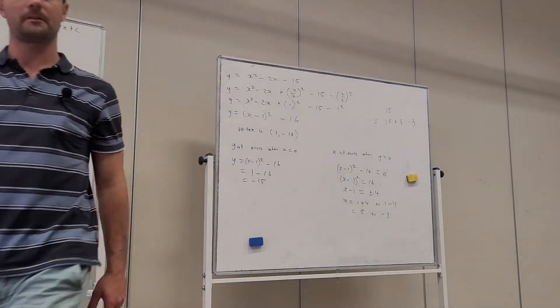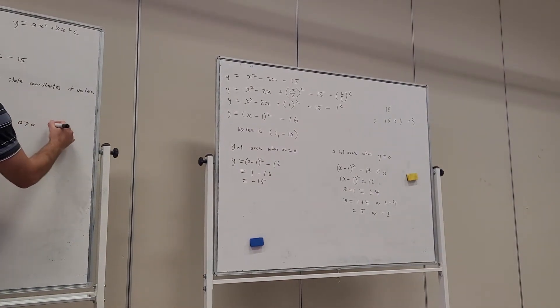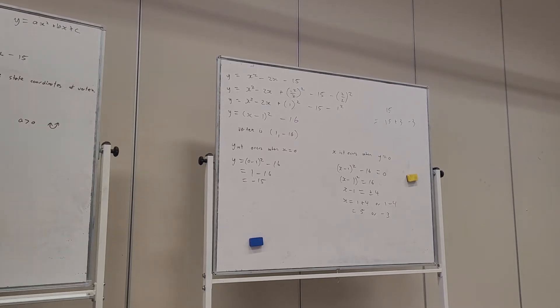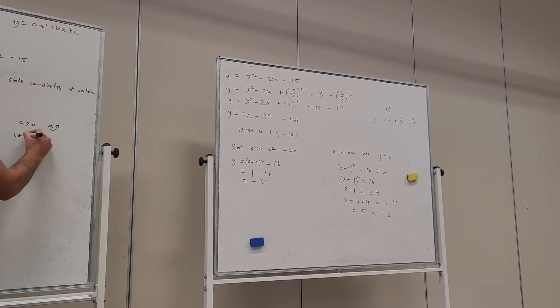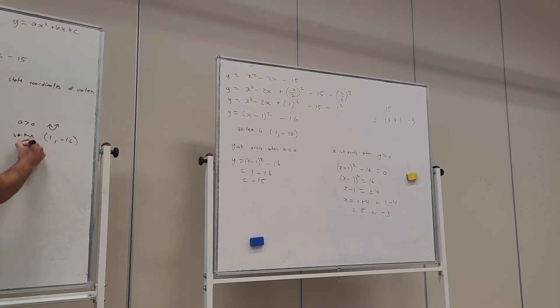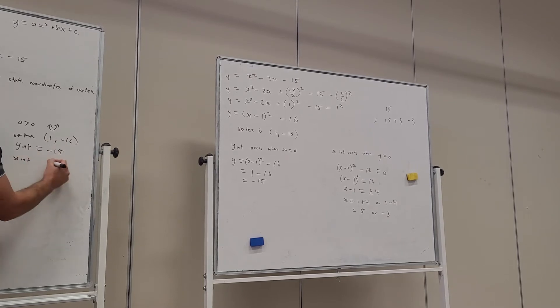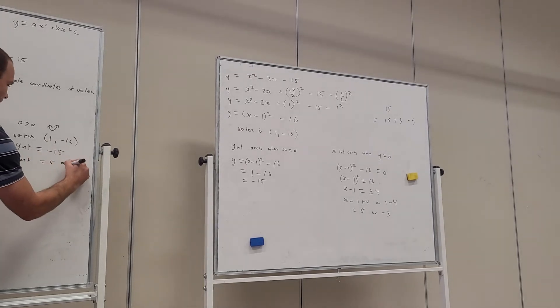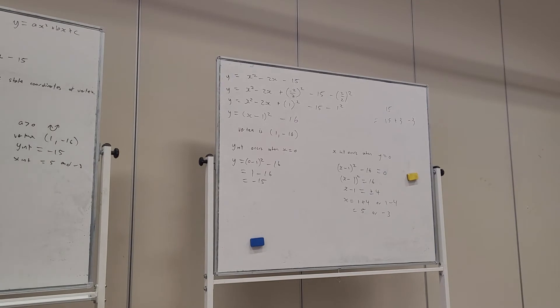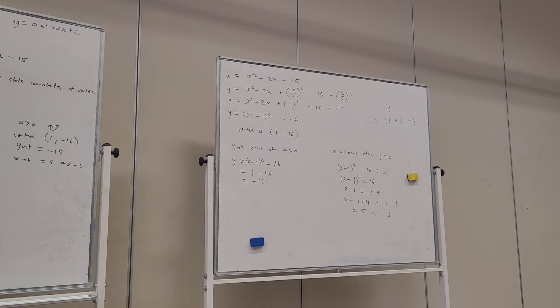And we've got all of the information we could possibly need to put it on a graph. So I'm going to just list the information here. Firstly, a is greater than 0, so that means it's positive. We've got vertex of x is 1, y is minus 16. We've got the y-intercept is minus 15. And the x-intercepts are 5 and minus 3. That's all the information, and we just need to put that on a Cartesian plane.